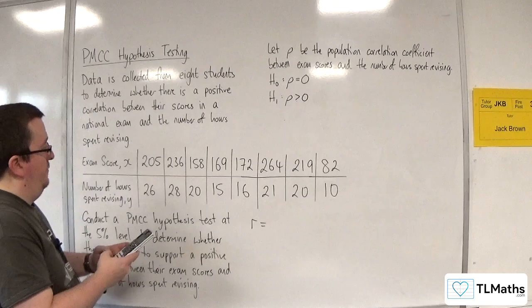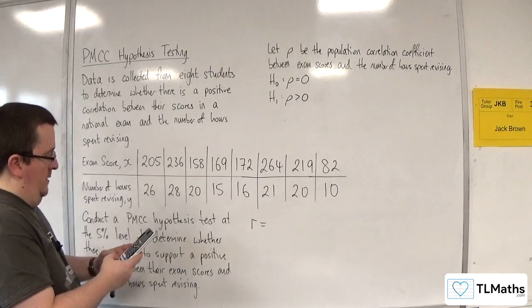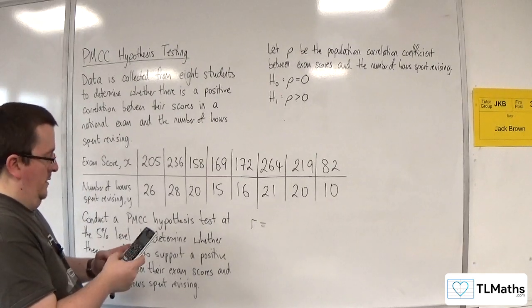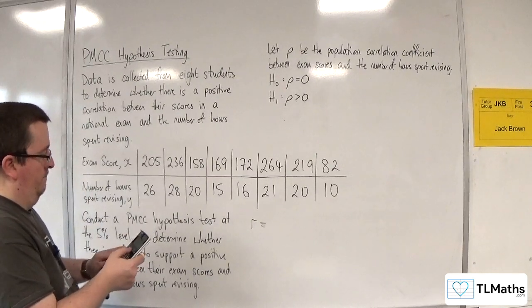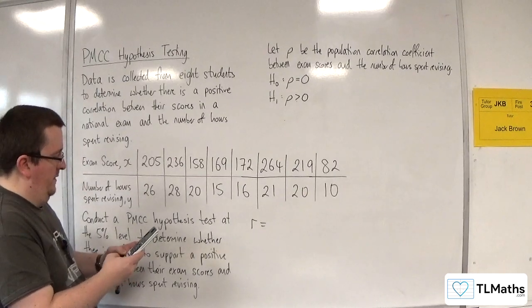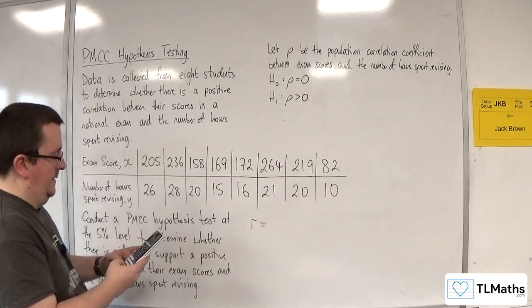So that means we need to type all the data in. So 205, 236, 158, 169, 172, 264, 219, 82, 26, 28, 20, 15, 16, 21, 20 and 10.